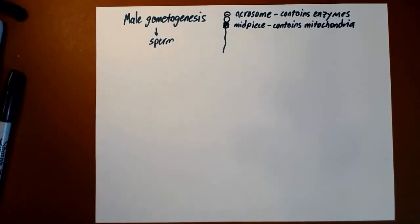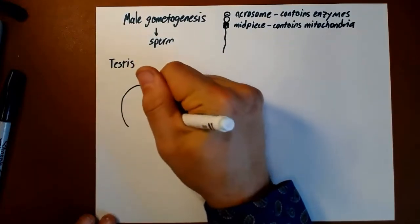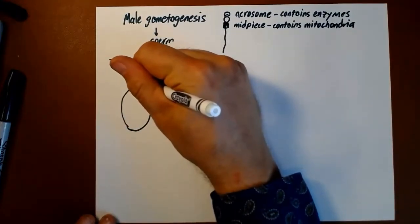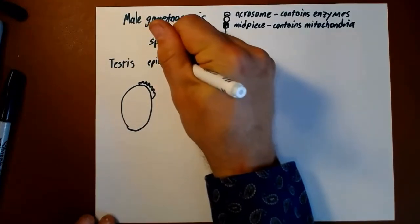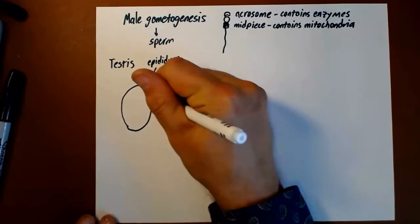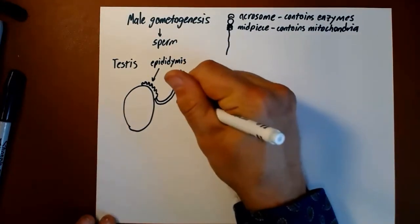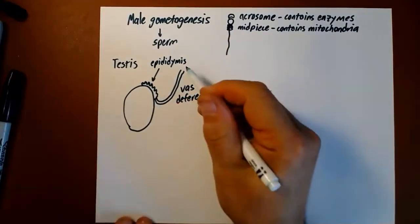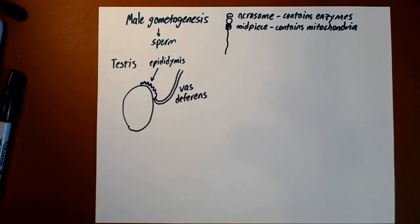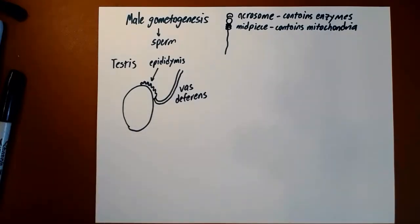Let's talk about where these come from. In the testes, we'll draw a testes here, it's an oval organ. On the surface of the testes we have a coiled up tube called the epididymis which leads into another tube called the vas deferens. This tube, the vas deferens, carries sperm away from the testes and up into the body where the vas deferens passes up and joins with the urethra around the prostate.